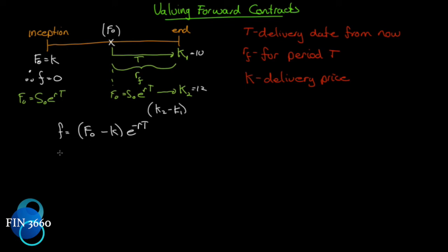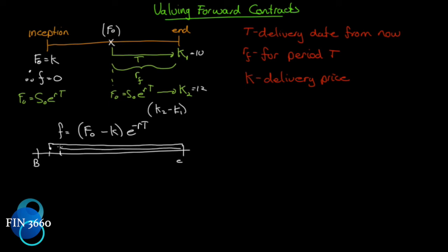For mark-to-market: at the end of day one, we calculate a new futures price, do the subtraction, and discount it back for that period. At the end of day two, we do the same thing. Day three, the same. Day four, we calculate the new futures price, take the difference from the original, discount it back — and so on, every single day, marked to market every single day.